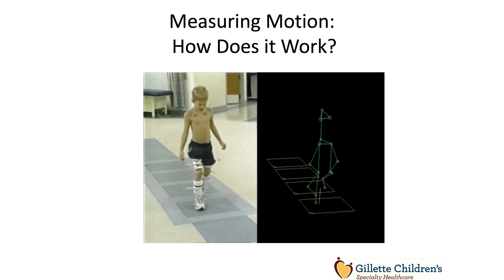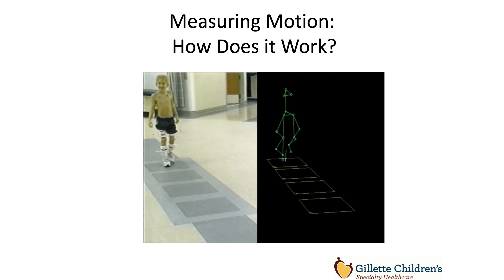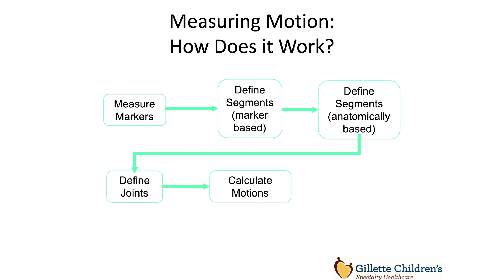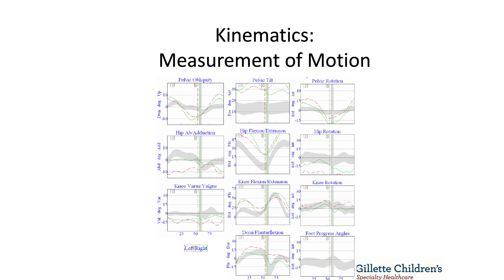We measure the markers, define the body segments with markers and anatomy, define the joints, and calculate the motions. The data is output on a set of graphs — this is three-dimensional gait analysis. The top graphs are for the pelvis, the second for the hip, the third for the knee, and the bottom for the foot and ankle. The left column is the coronal plane, the center the sagittal plane, and the right the transverse plane. Each graph represents one gait cycle from initial contact through stance, toe-off, swing, and back to initial contact. Normative data appears in gray bands, the patient's right side in green, and left side in red.